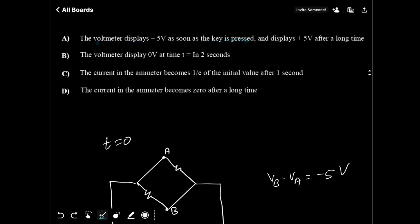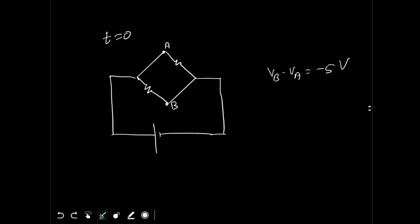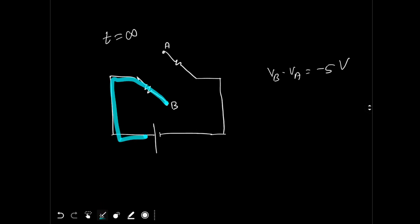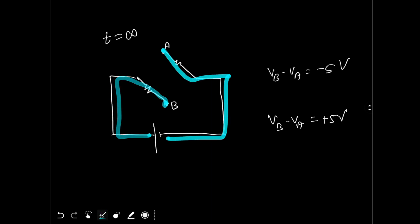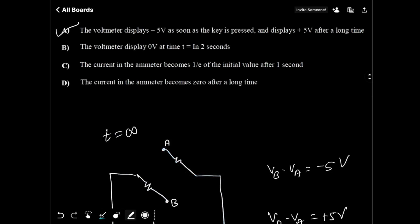Now we need to see whether the voltmeter displays plus 5 volt after a long time. After a long time, the capacitor has achieved steady state — it has maximum charge and there is no current flowing through it. So we can remove those two branches. Now terminal B is connected to the positive end of the battery and A is connected to the negative end, so VB minus VA will be plus 5 volt. So option A is correct.